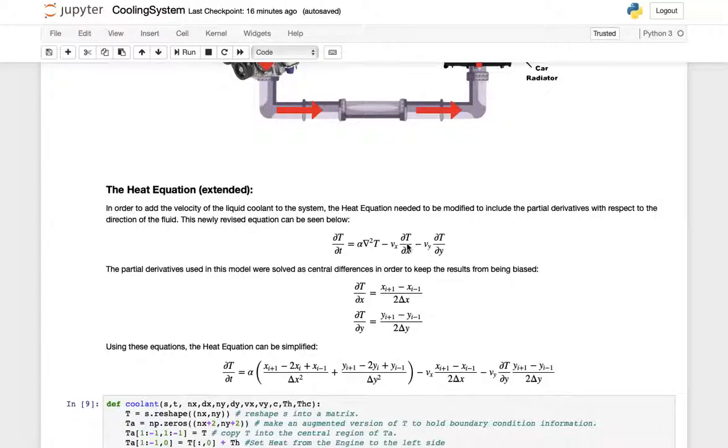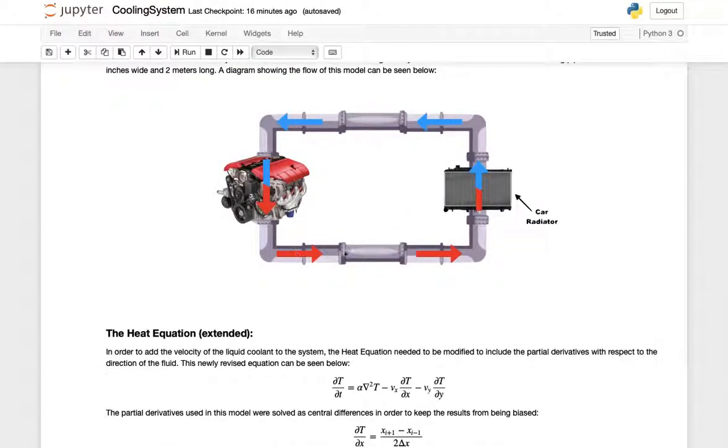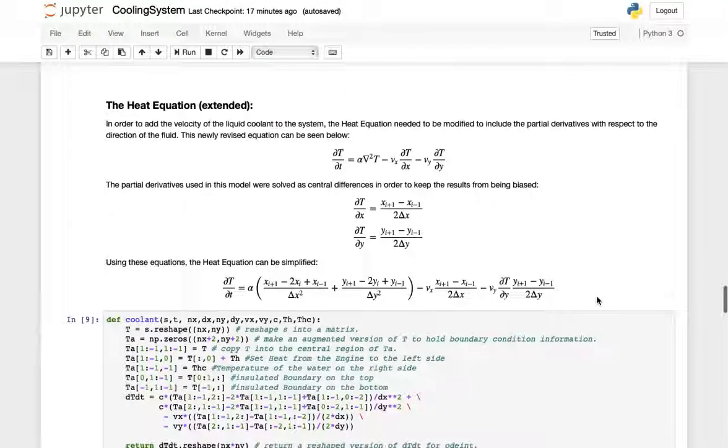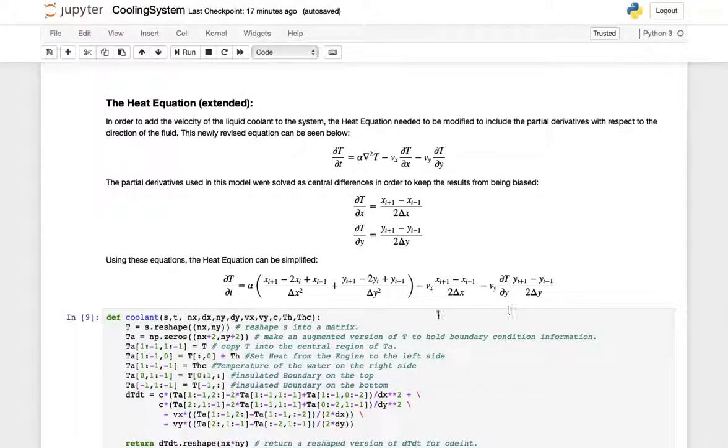This gives us our velocity in the x direction which would be on the top and the bottom, and the velocity of our y direction which would be on our right and our left. Using that we can simplify this equation once again.